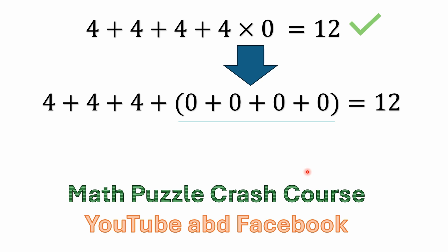The other thing to keep in mind is that multiplication is shorthand for repeated addition. So you could replace 4 times 0 with addition and just say 0 plus 0 plus 0 plus 0.